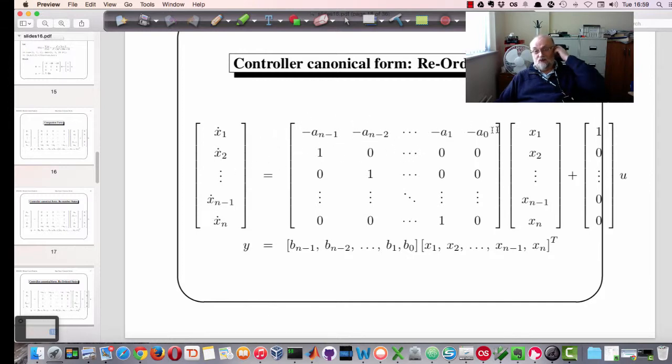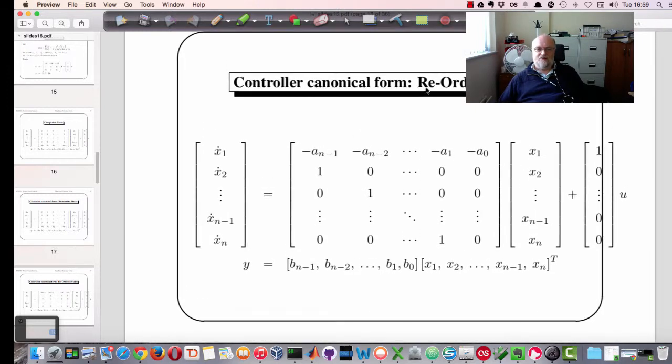And notice the change of the order of the coefficients of both the numerator and denominator. This particular form is called the controller canonical form. It's the form that MATLAB gives you for that TF2SS transformation. And it's useful for looking at controllability and for designing state feedback, as we will see in a later lecture.